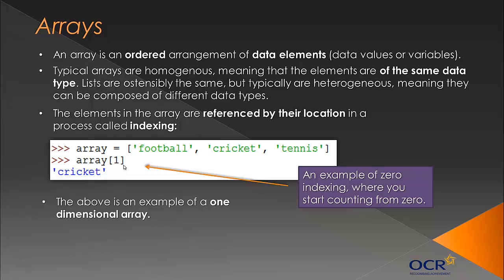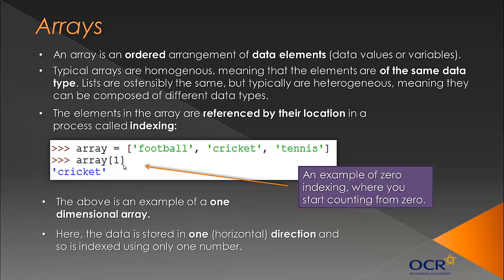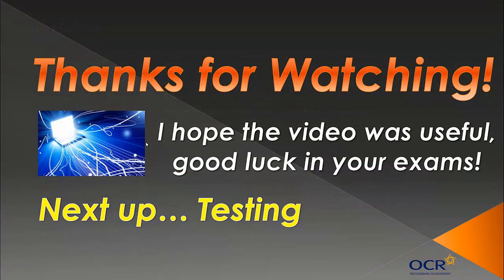The above example is a one-directional array, meaning it's stored in one horizontal direction, so you only use one number to index it. You don't need to know about multidimensional or two-dimensional arrays for GCSE, but basically they store data in more than one direction - horizontally and vertically - which means you have two numbers to index it instead. It's like a list within a list or an array within an array, but that's beyond your spec. Anyway, hopefully that video was useful. Next up is the last video - looking at testing.